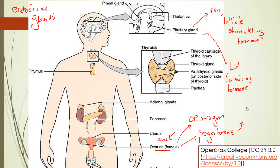High levels of progesterone will inhibit the secretion of FSH and LH, so there's a negative feedback loop there.